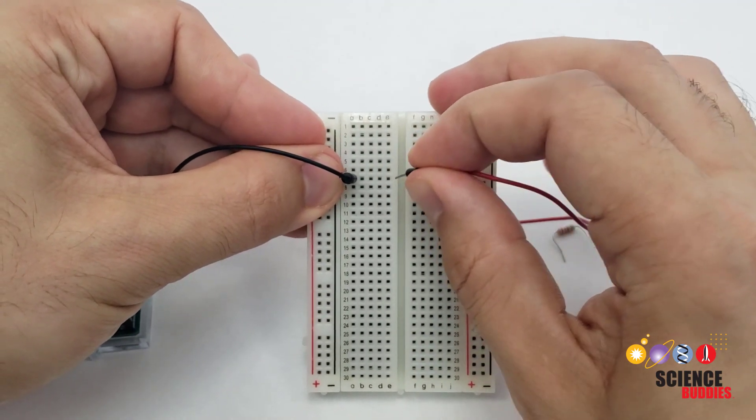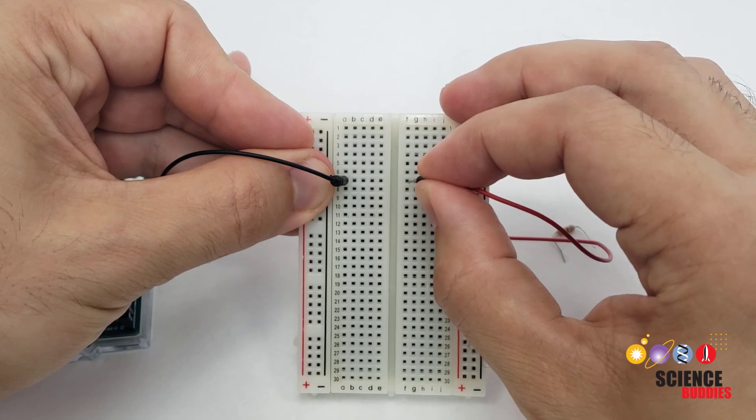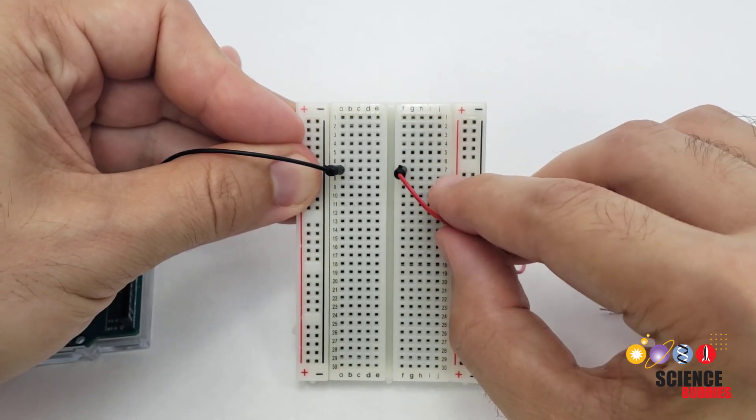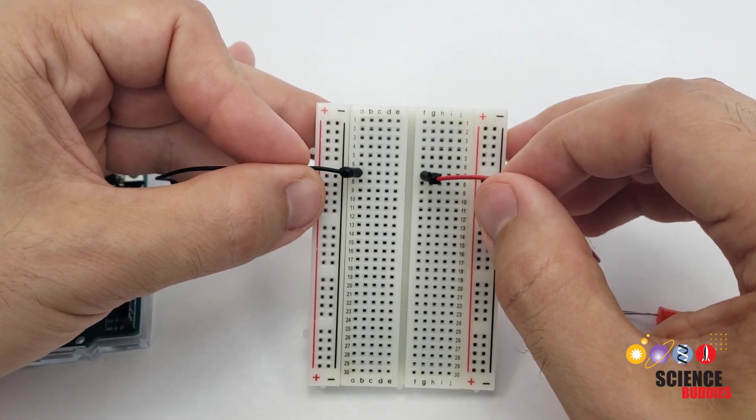Similarly, holes are not connected across the gap in the middle of the breadboard. So, if I move the red wire over here to column F, even though it is in the same row, row 7, as the black wire, the two wires are not connected.